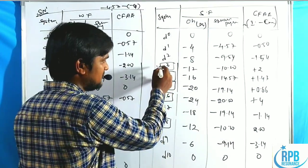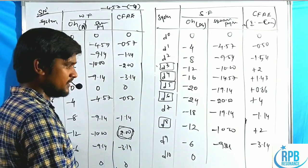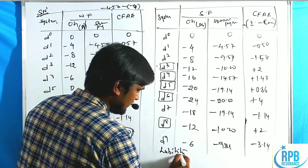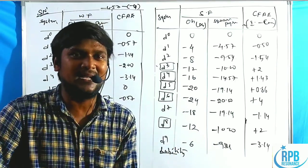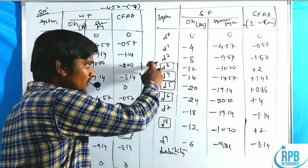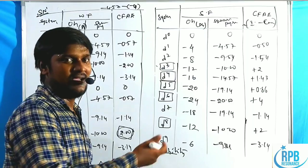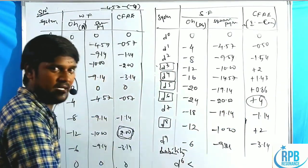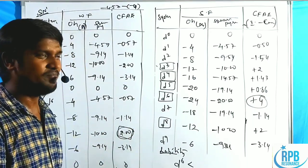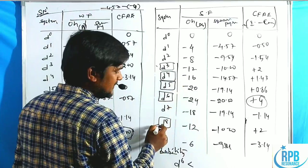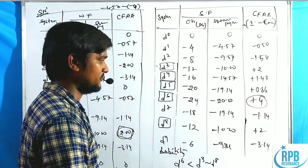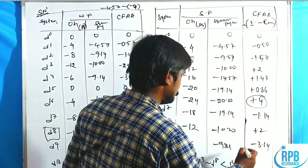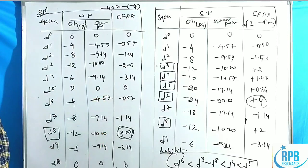So D3, D4, D5, D6, D8 are all inert complexes — all positive values are inert. Now the lability order: highest positive value means lesser labile (more inert); lowest positive value means more labile. Among all values, 4 is maximum and belongs to D6 — so D6 has minimum lability. After D6 is 2, so D3 and D8 have similar values. Then 1.43 belongs to D4, and finally 0.86 belongs to D5. This is the lability order for strong field complexes in SN1 mechanism.